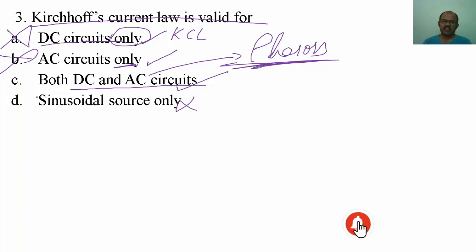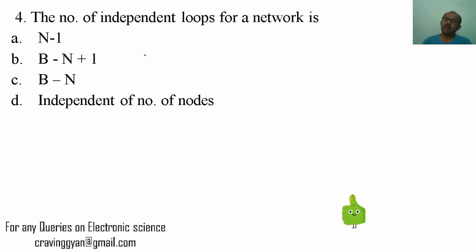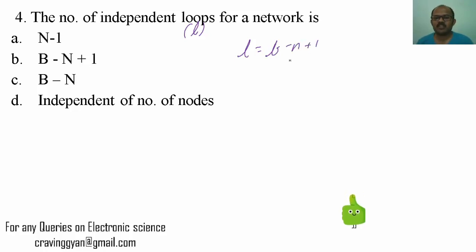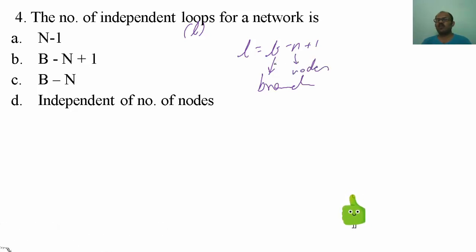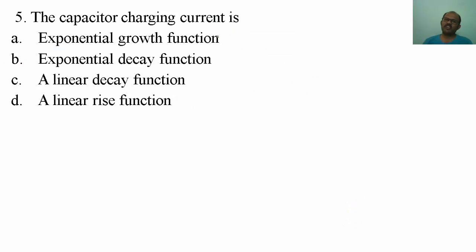Fourth question: the number of independent loops for a network, meaning how many loop equations you can write, is given by B minus N plus 1, where B is the number of branches and N is the number of nodes. This many loop equations you have to write. Hence the correct answer is option B.